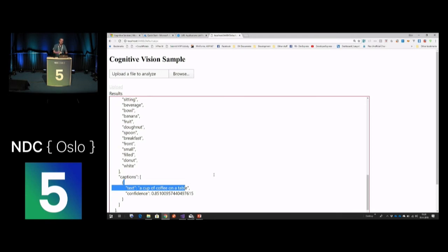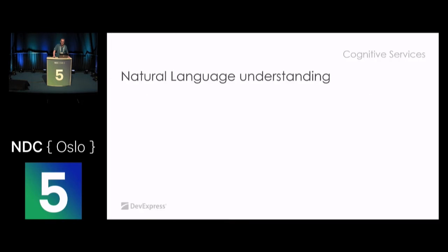That's it about the Vision API - any questions you can ask me later. I'd like to continue with one of the other interesting things from the Cognitive Services, which is actually what was in the title of this session: 'where we're going, we don't need keyboards.' If we don't want to use keyboards anymore, we should probably talk to the computer, and that brings us to natural language understanding.